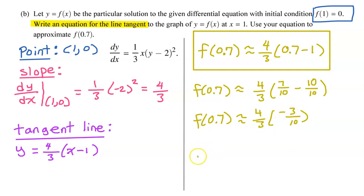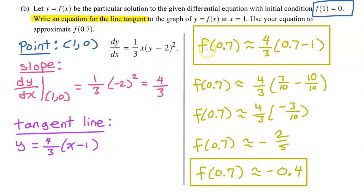So now I have f(0.7) is approximately equal to 4/3 times negative 3/10. The 3's will cancel each other out. So I have f(0.7) is approximately equal to negative 4/10, which reduces to negative 2/5, which equals negative 0.4. Both of these answers are equally acceptable.